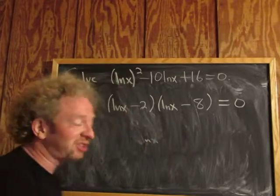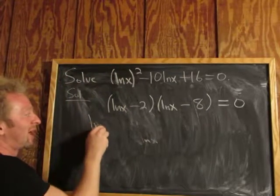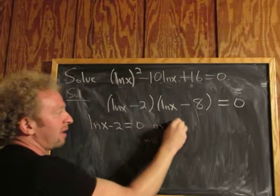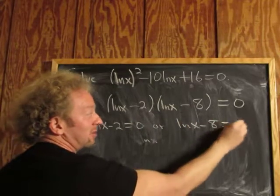We have a product equal to 0, so we set each factor equal to 0: (ln x - 2) = 0 or (ln x - 8) = 0.